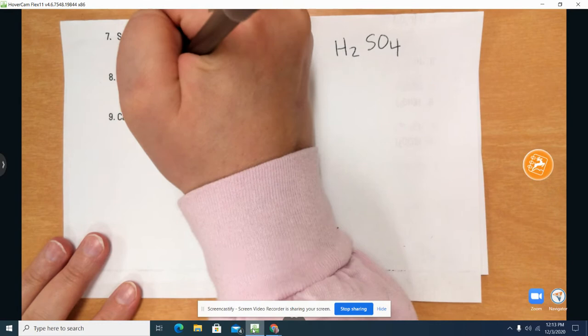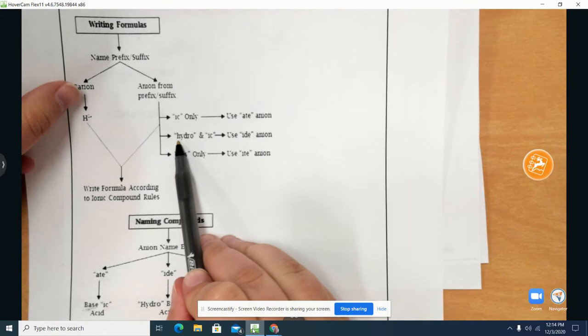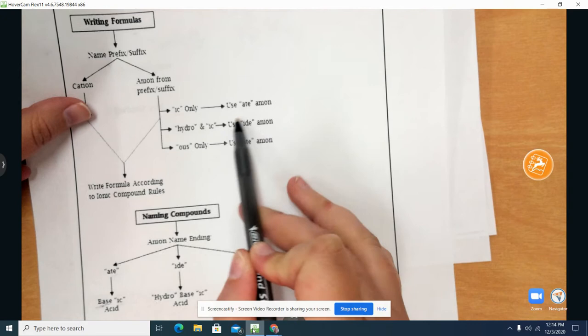So looking at my cheat sheet or the flowchart, if it ends in, or if it has hydro-ic, that means the original ending was ide for our anion.